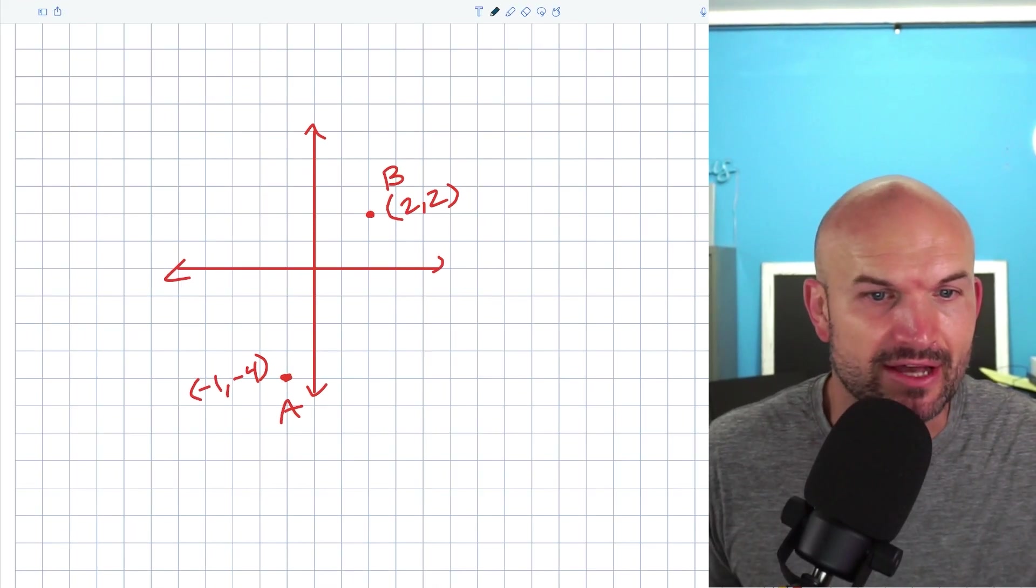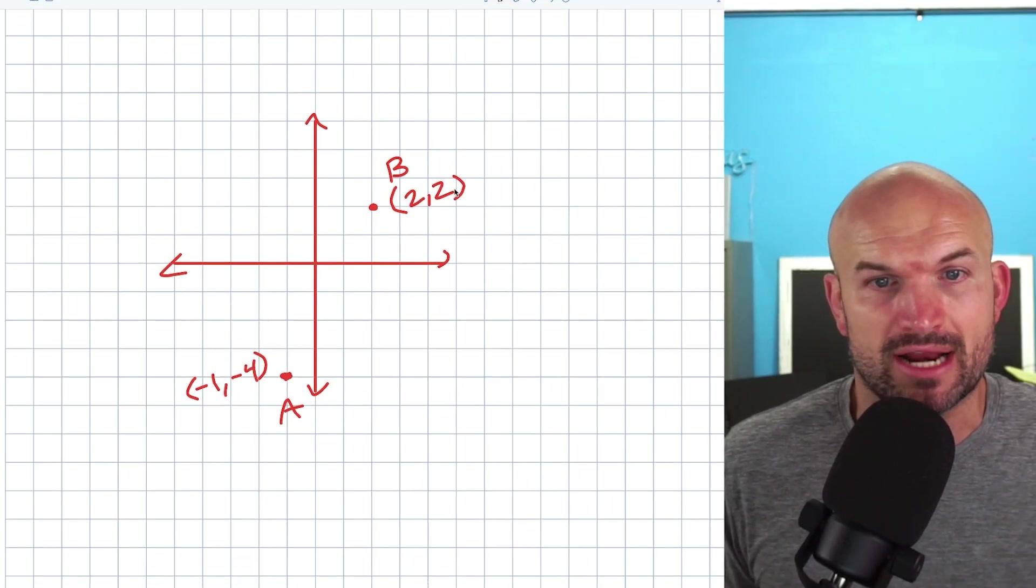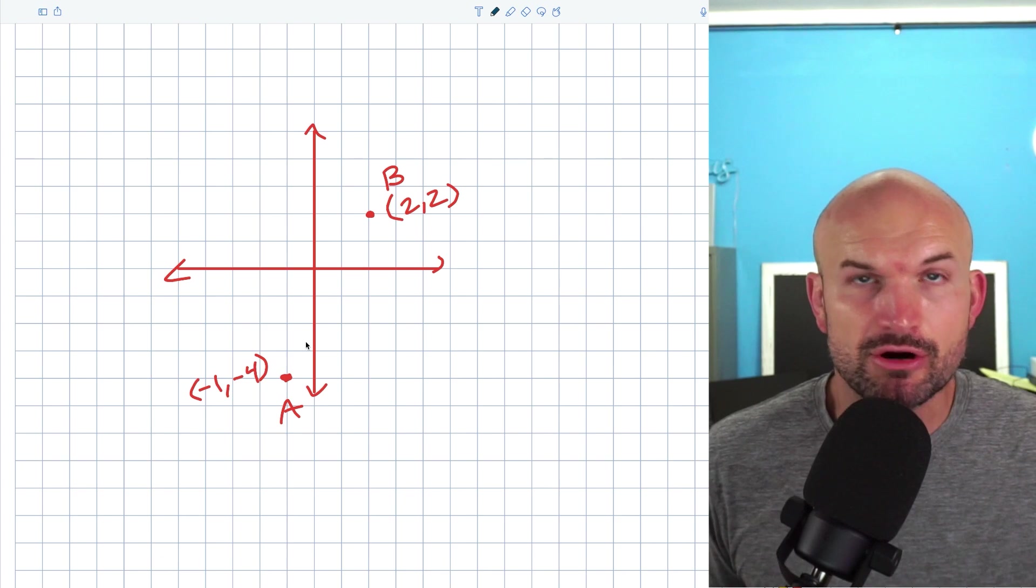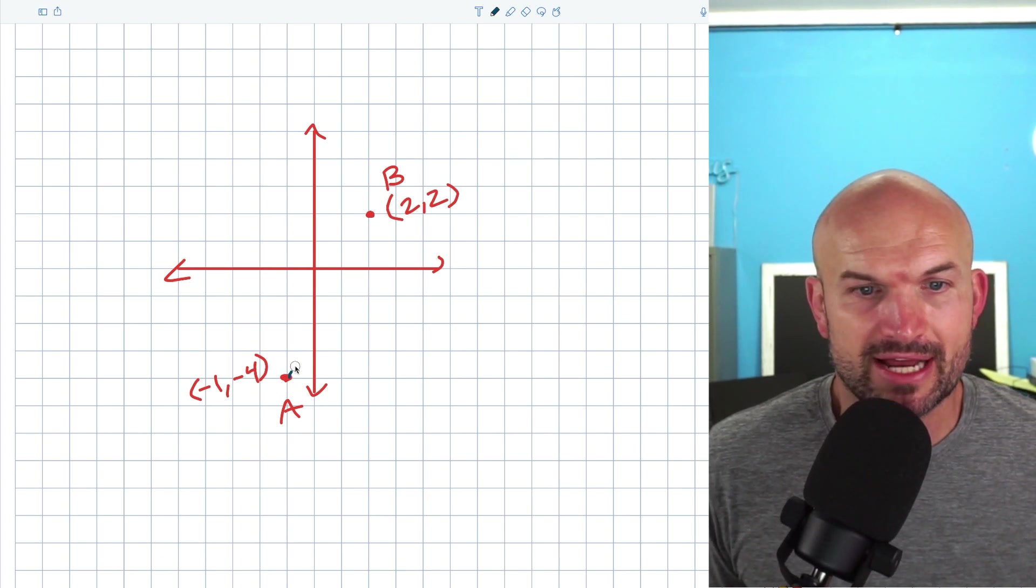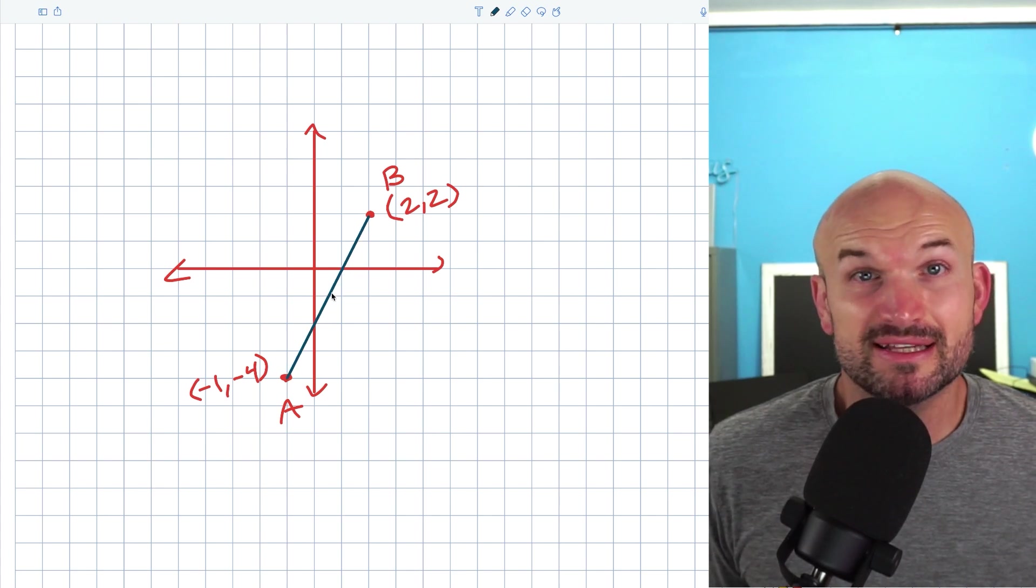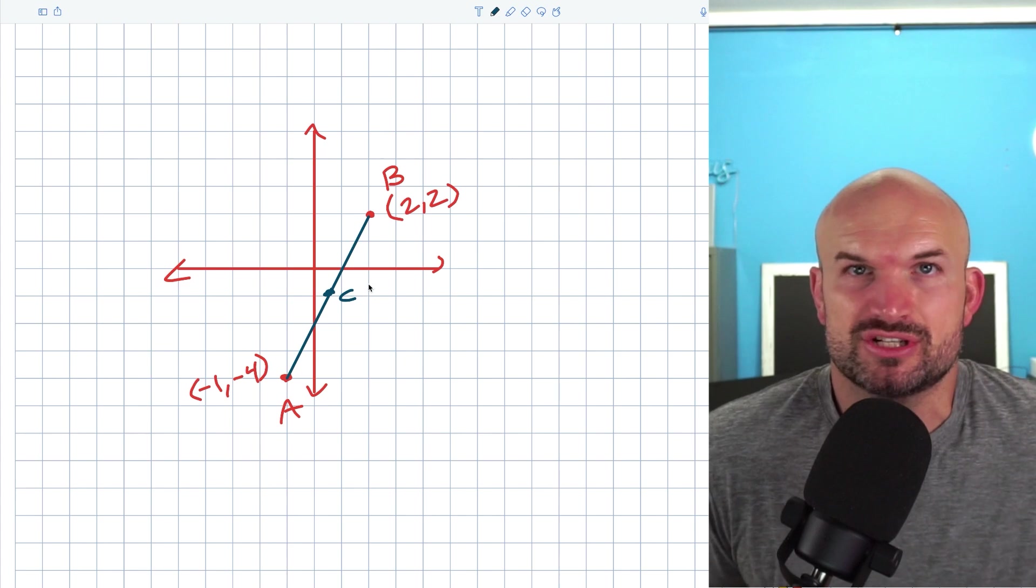So let's just take a look here at what we have. In this example, we have two points here. We have A, which is that point negative one, negative four, and we have B, which is that point two, two. So remember, the midpoint is going to be some point that's right in the middle. So if we draw a straight line here, we can see the midpoint, if I was just going to estimate or something like that, it'd be somewhere around there, which let's just call C.